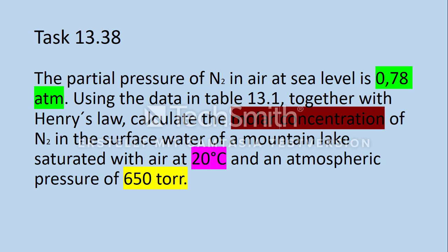The partial pressure of nitrogen in air at sea level is 0.78 atm. Using the data in table 13.1, together with Henry's law, calculate the molar concentration of nitrogen in the surface water of a mountain lake saturated with air at 20 degrees Celsius and an atmospheric pressure of 652.